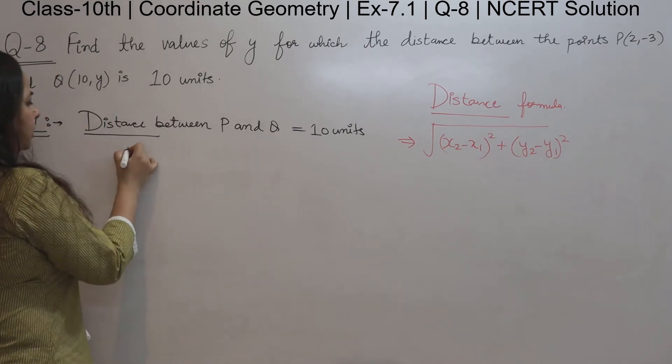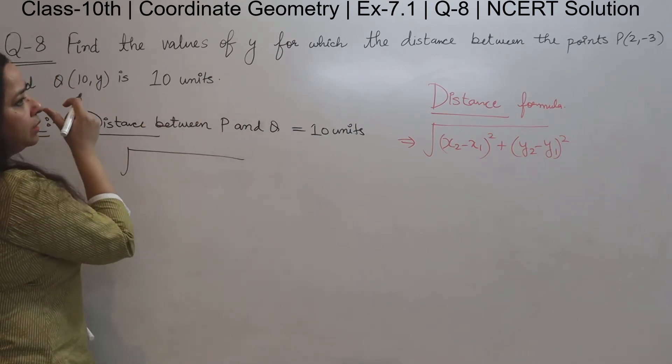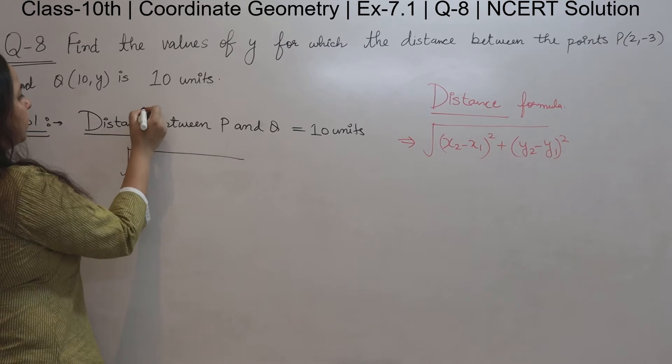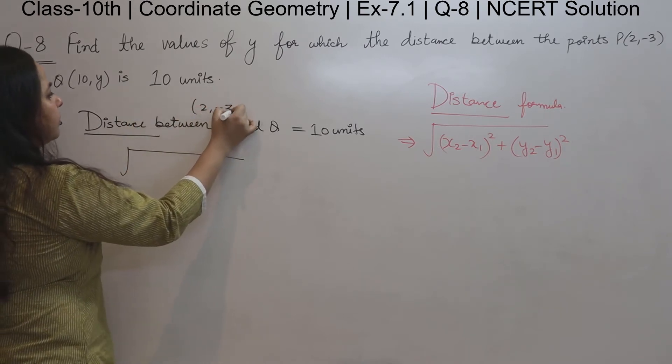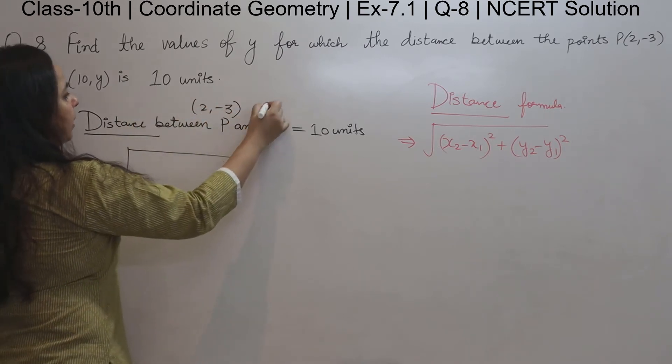So distance is under root... The points are 2 comma negative 3, so P is 2 comma negative 3, and Q is 10 comma y.